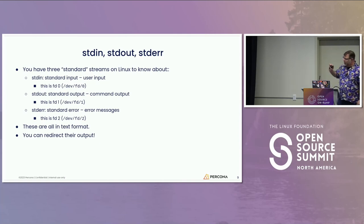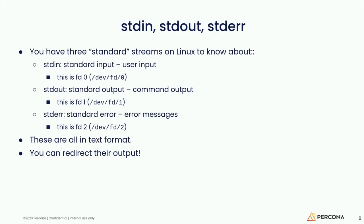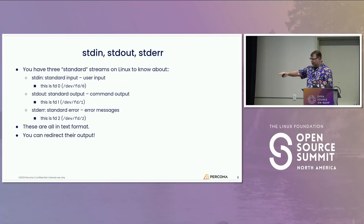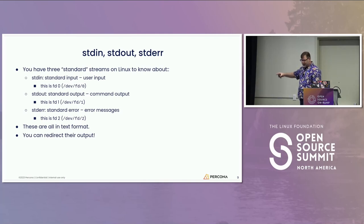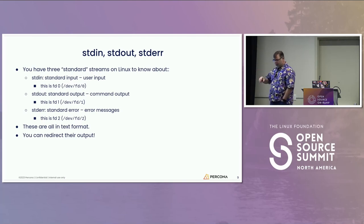There are three standard streams you should know about on Linux: standard in, standard out, and standard error. Everything you type in goes through standard in. When you type a command at a terminal, you're typing through standard in. When you see output from a command at the terminal, that's standard out. If you have an error, it comes to standard error — usually directed to your terminal, but you can redirect that to other places, which can be very useful.